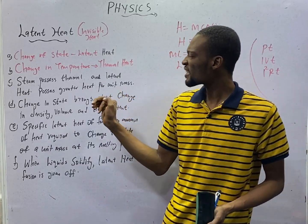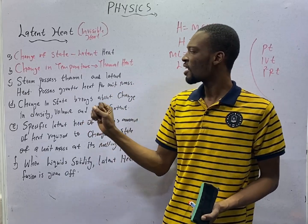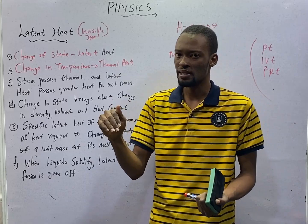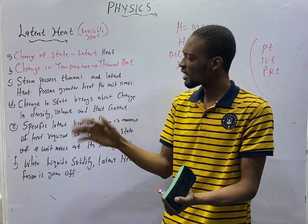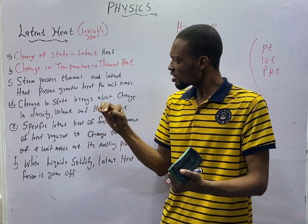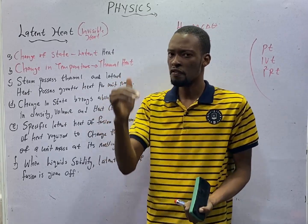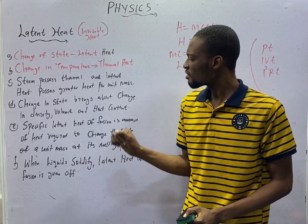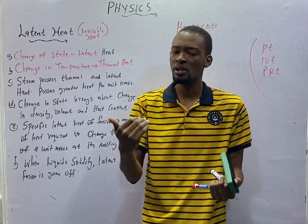Steam possesses both thermal heat and latent heat, and steam possesses greater heat per unit mass. This is why a steam burn will cause more damage than water in other states. Steam possesses latent heat, and change in state brings about change in density, change in volume, and change in heat content.